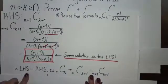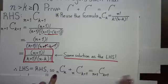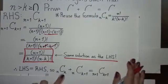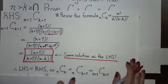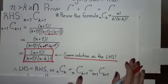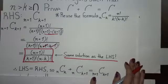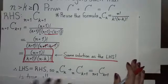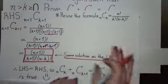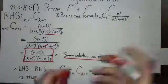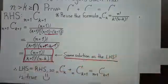Therefore, the left-hand side is equal to the right-hand side, so n combination k plus n combination k plus one is, in fact, equal to n plus one combination k plus one. Thank you for watching the video.